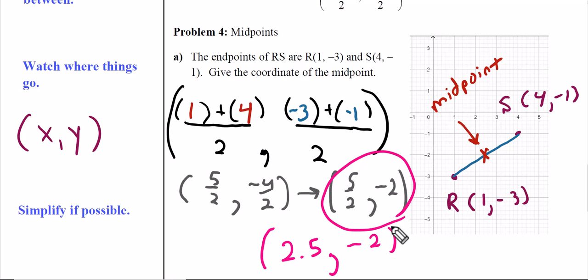If we look at our graph, that's pretty close to what we thought. 2.5 is right here, then we go down to -2. So this is (2.5, -2) - that is the coordinate of the midpoint for this given line segment.